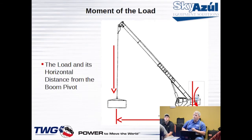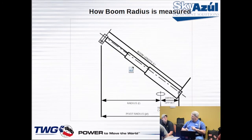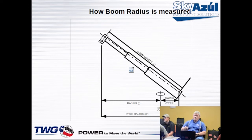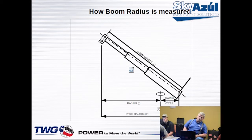The moment of the load is the load at its horizontal distance from the pivot — that's how it calculates the load. Moving on about this pivot radius: you can see the pivot radius is between the pin at the tip of the boom and the actual hinge pin. That's the measurement we use to calculate moment.